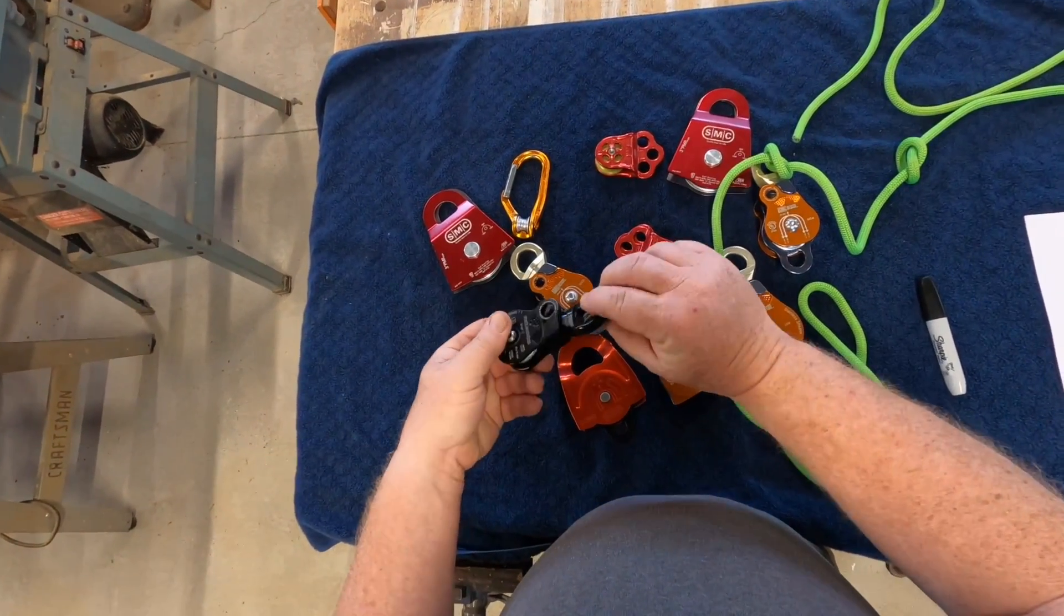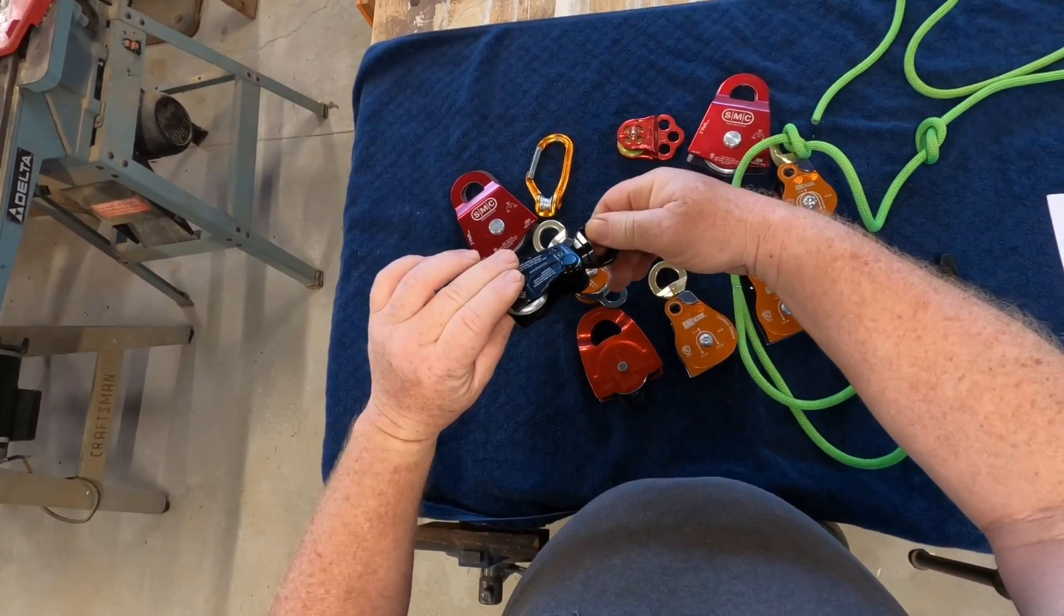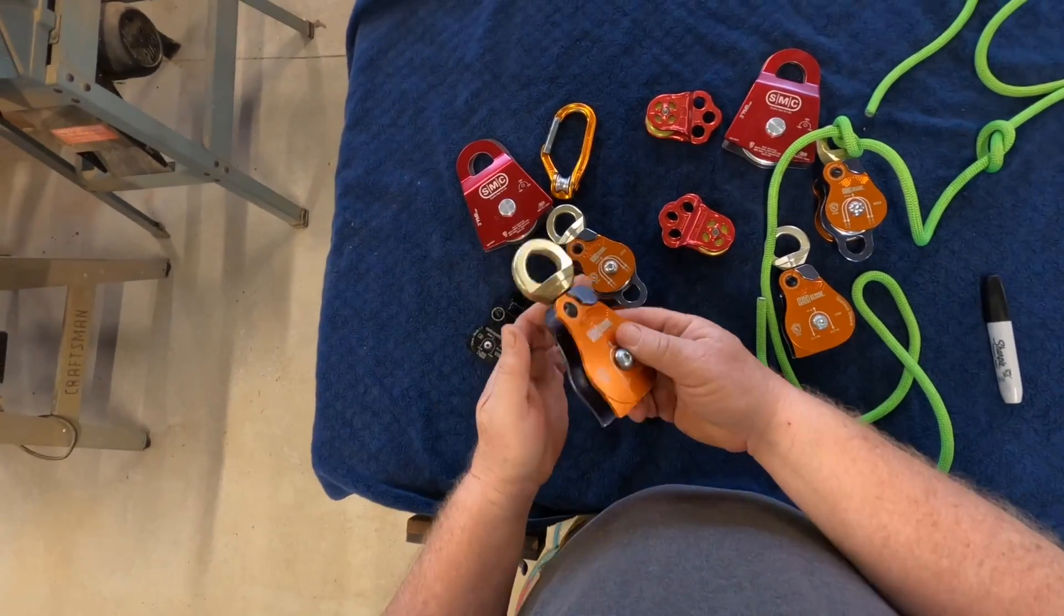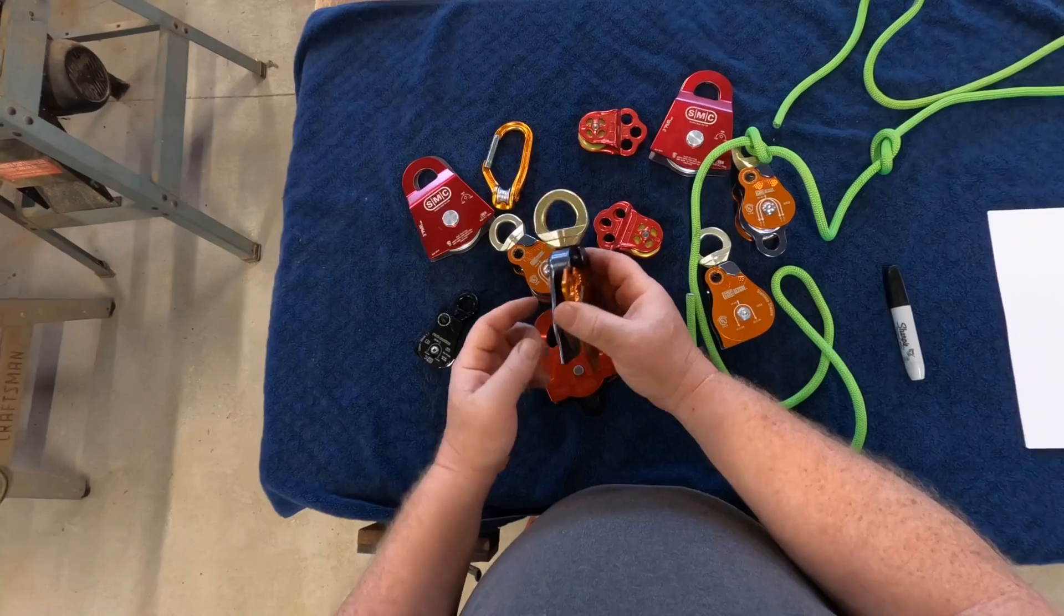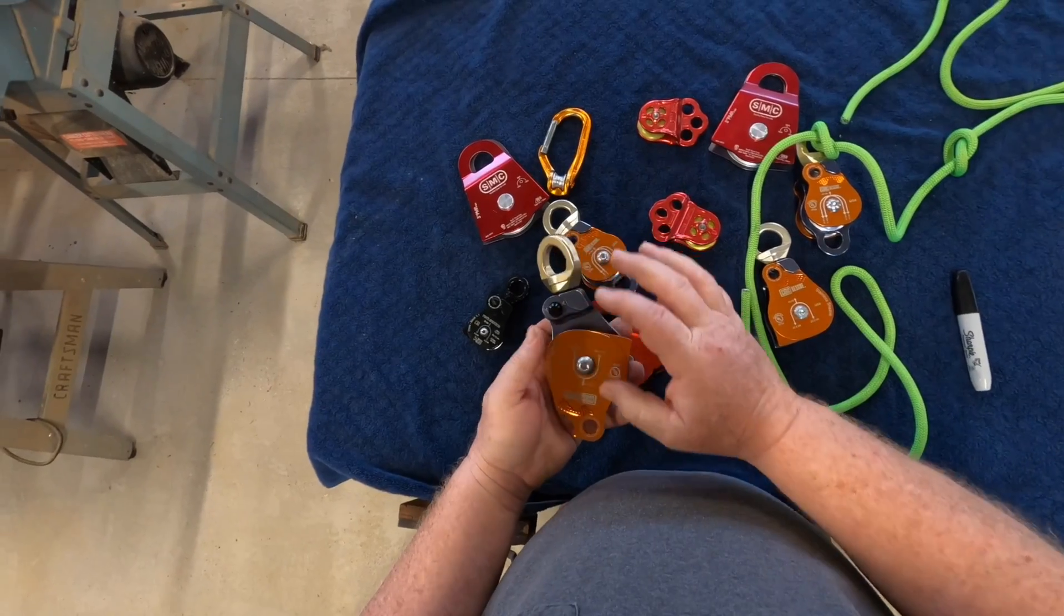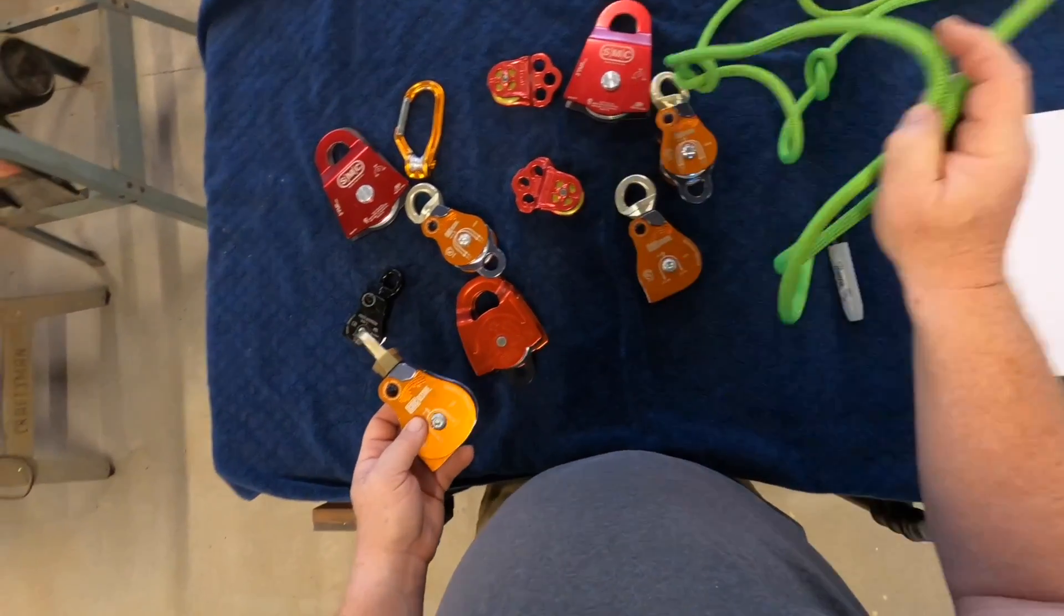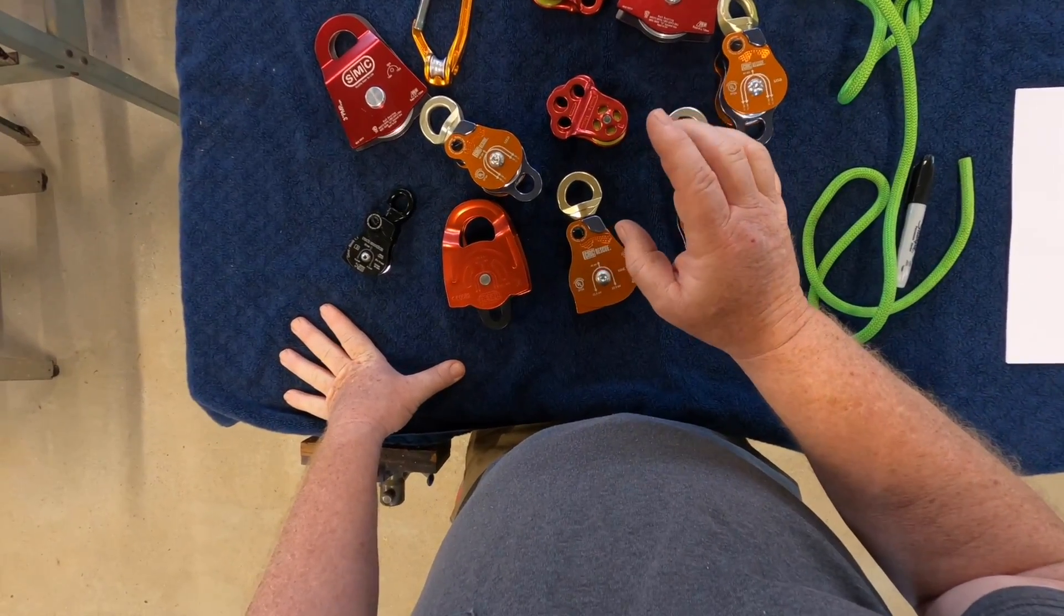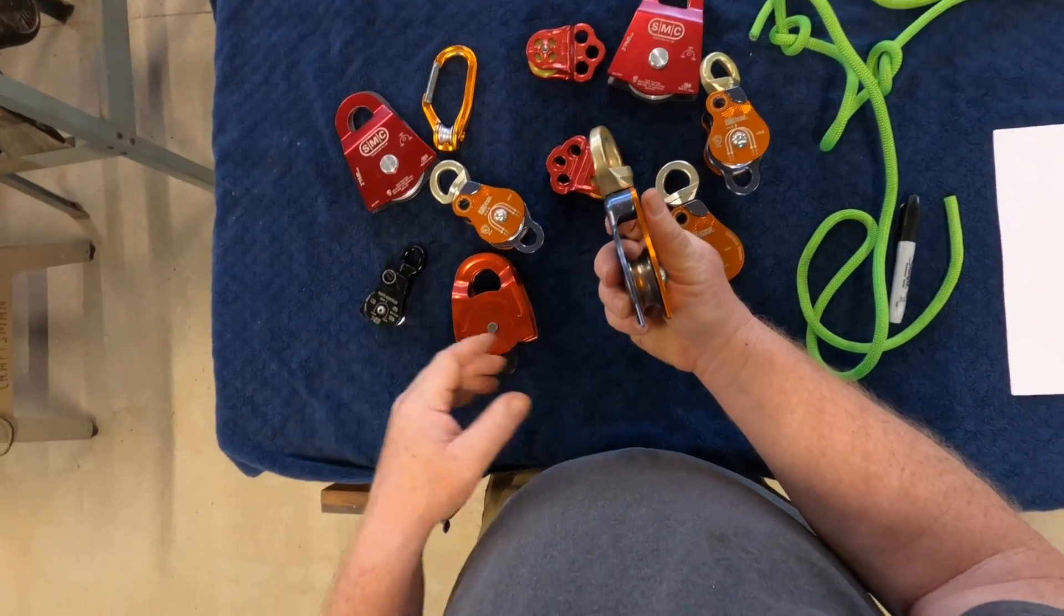Some of the more fancy ones have swivels, so the pulley can orient itself depending on which angle is being pulled at, such as these right here. These are going to be more expensive. They also have open side plates. You can load your rope by opening one side plate instead of two. Which means you can have a carabiner here and load it after the carabiner is loaded, which is really nice. So be mindful if you're using these for rope rescue that you choose the right style, you choose the right size for efficiency.